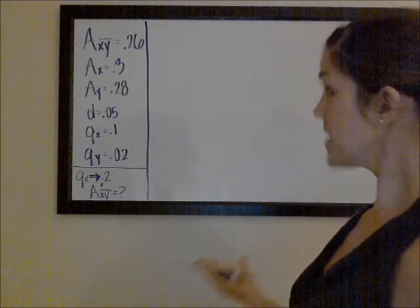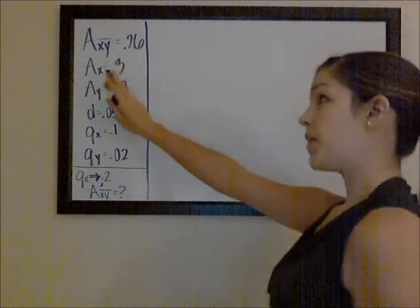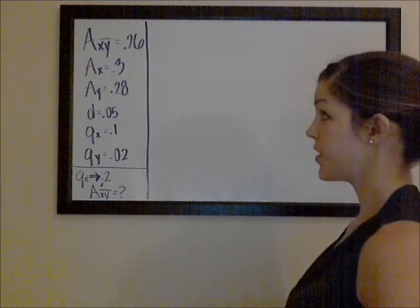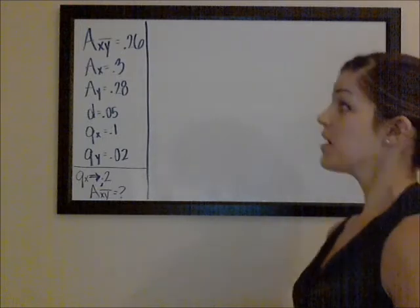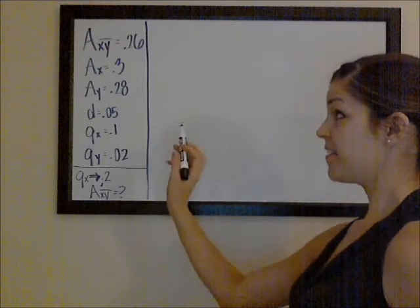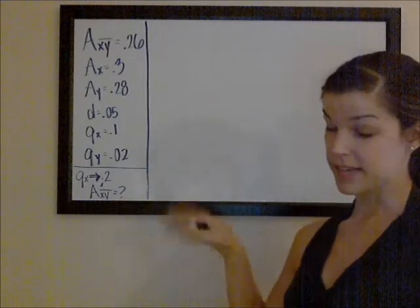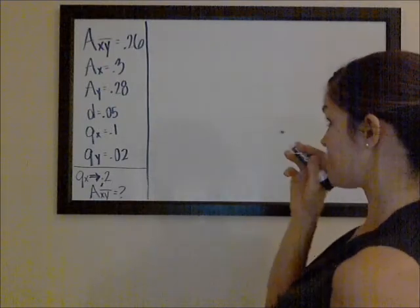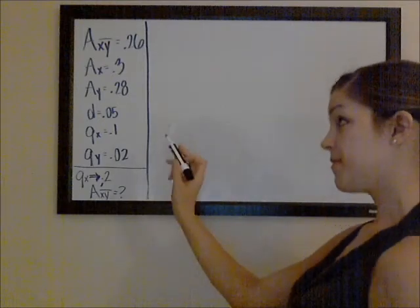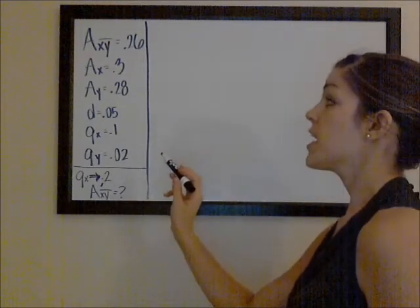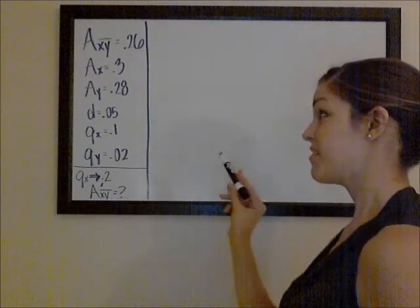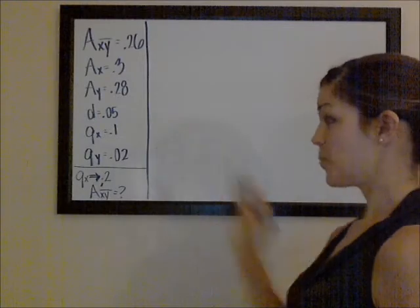They tell us that AXY bar — the actuarial present value of a whole life insurance payable at the end of the year of death of the last survivor between X and Y, whichever dies last — is 0.26. The actuarial present value of a whole life insurance on an X-year-old payable at the end of the year of death is 0.3, and AY is 0.28.